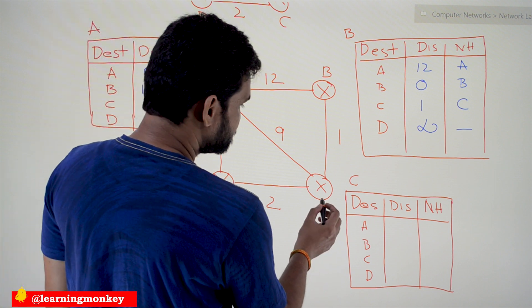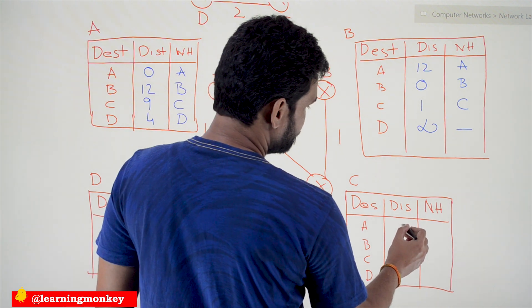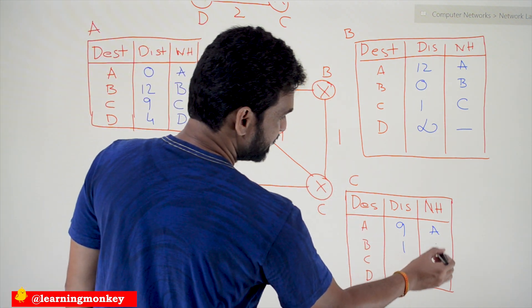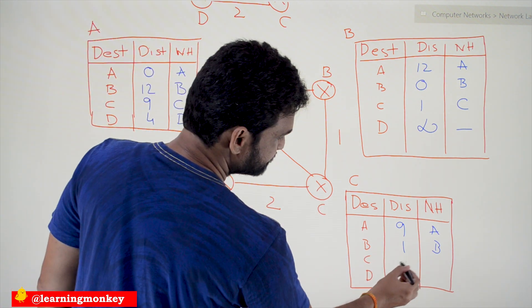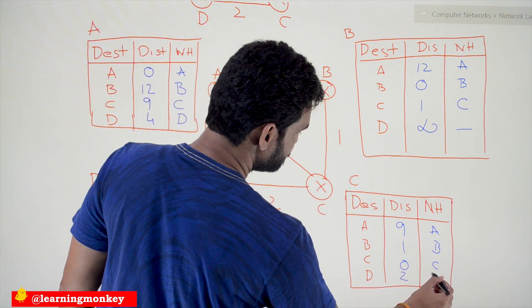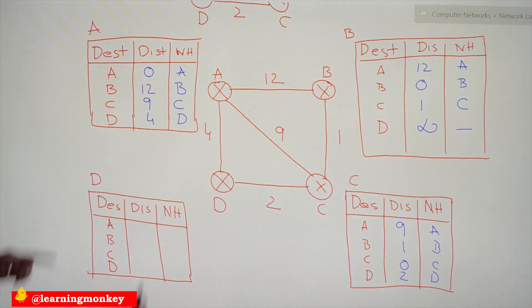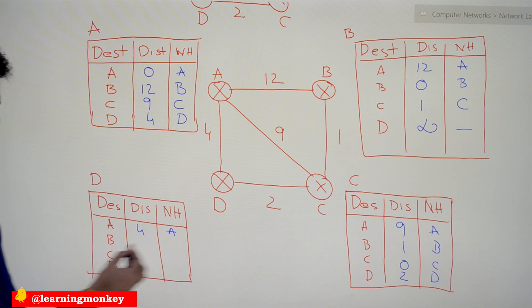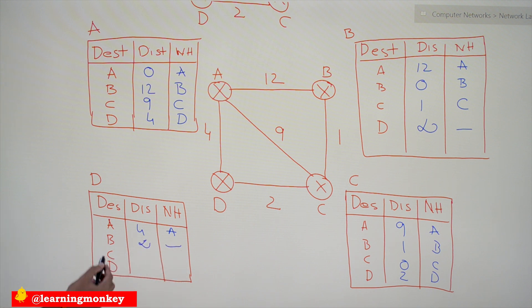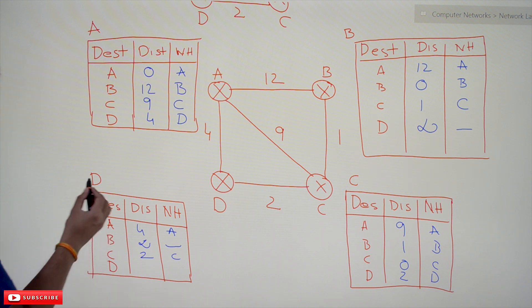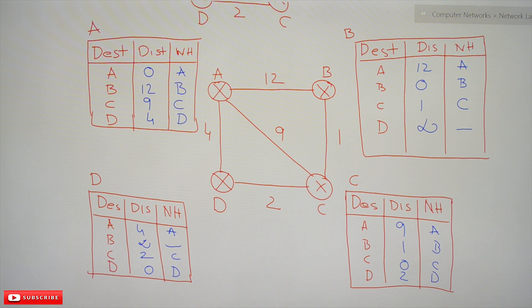The routing table at C: C to A is 9 with next hop A. C to B is 1 with next hop B. C to C is 0 with next hop C. C to D is 2 with next hop D. The routing table at D: D to A is directly connected — distance 4, next hop A. D to B is not directly connected — distance infinity, next hop unknown. D to C has distance 2 and next hop C. D to D is 0 with next hop D.